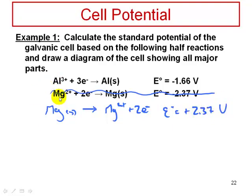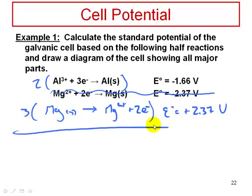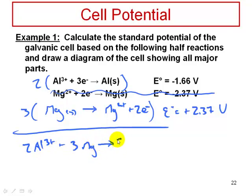For the balanced equation, you have to multiply the half-reactions. The top one gets multiplied by two, and the bottom one by three. When you add them together, you get: 2Al³⁺ + 3Mg → 2Al + 3Mg²⁺.